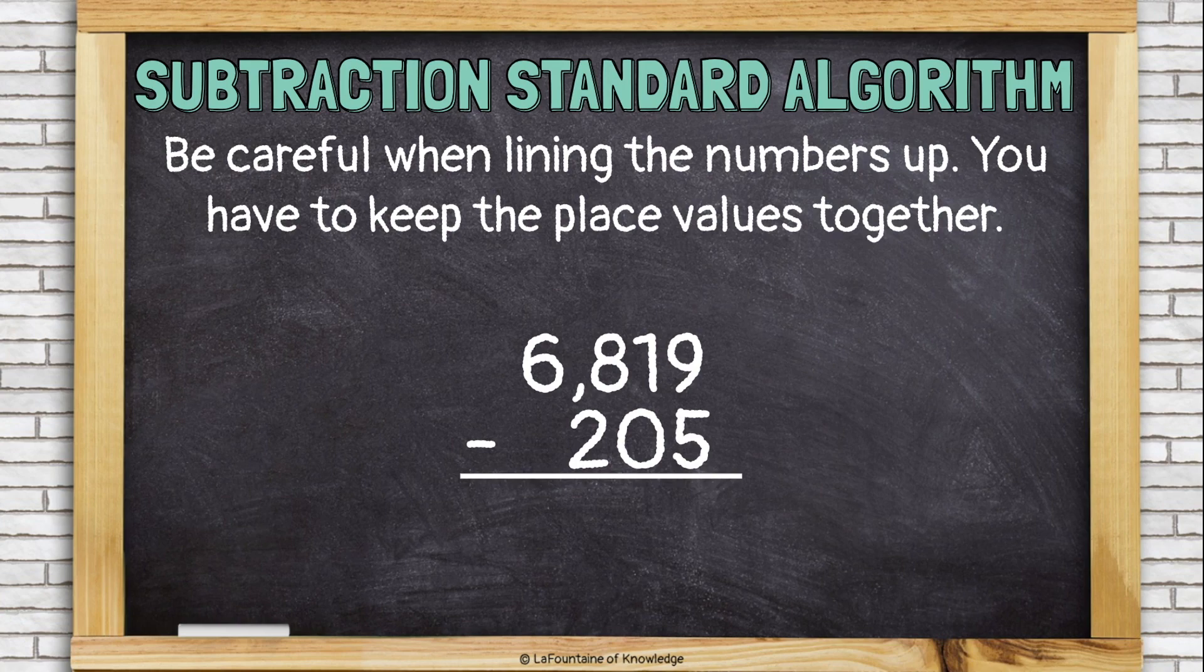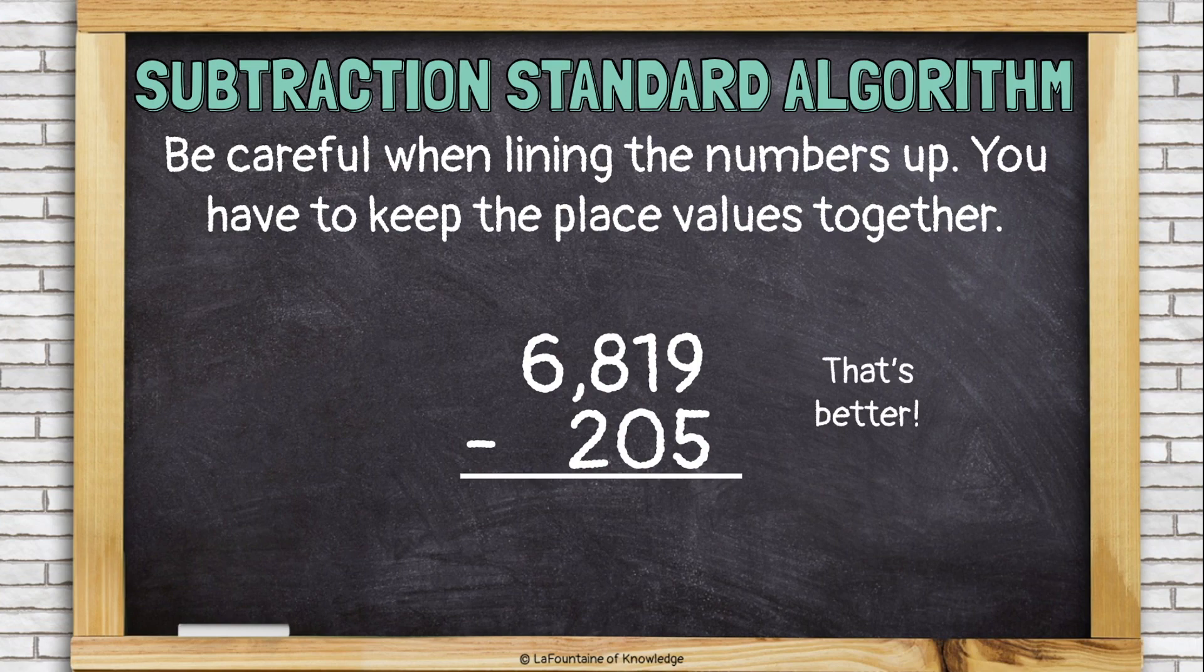We need to keep the places together. Now, the ones are lined up, the tens are lined up, the hundreds are lined up, and the thousands are lined up. Now, we can subtract each place one at a time. Nine minus five is four. One minus zero is one. Eight minus two is six. And, six minus nothing is six.